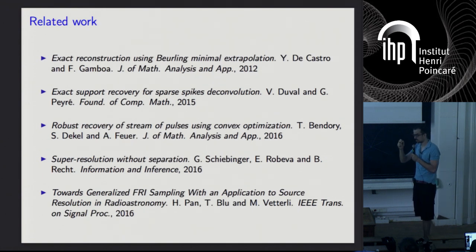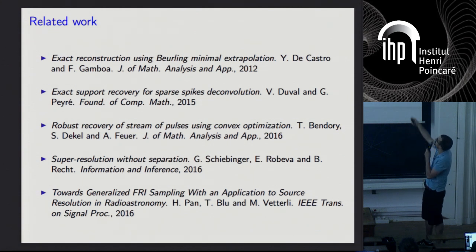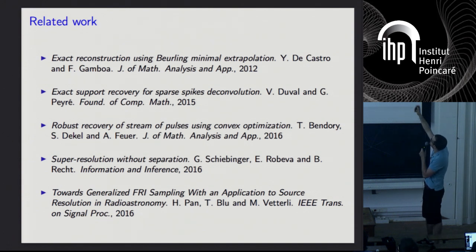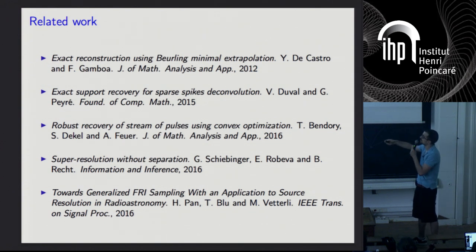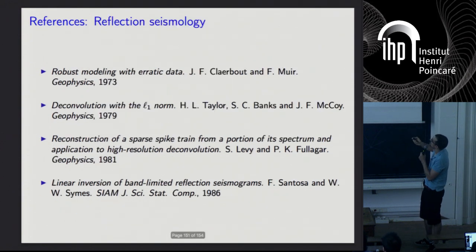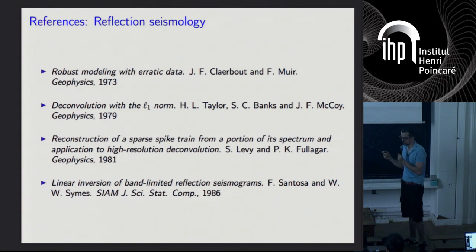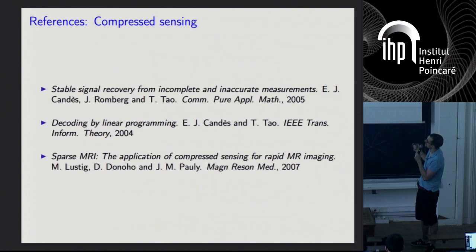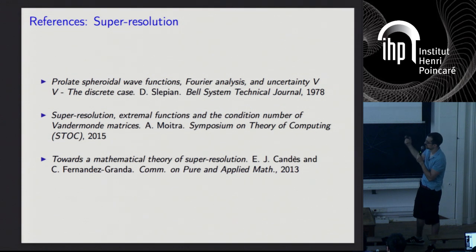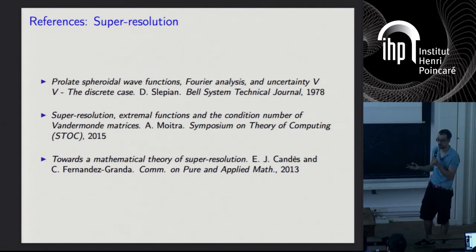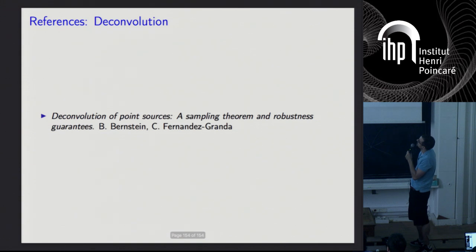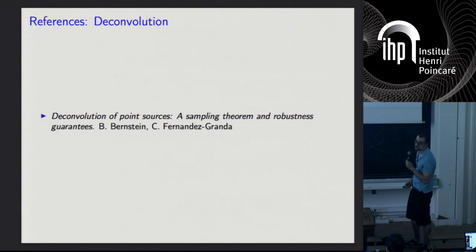Before finishing, I want to mention related work. Johan's work started total variation norm minimization for these kinds of problems. Gabriel's work on the recovery of sparse spikes from low-pass data. There are references on reflection seismology, compressed sensing, and the recovery of spikes from low-pass data. The paper will be out hopefully in a week or so.